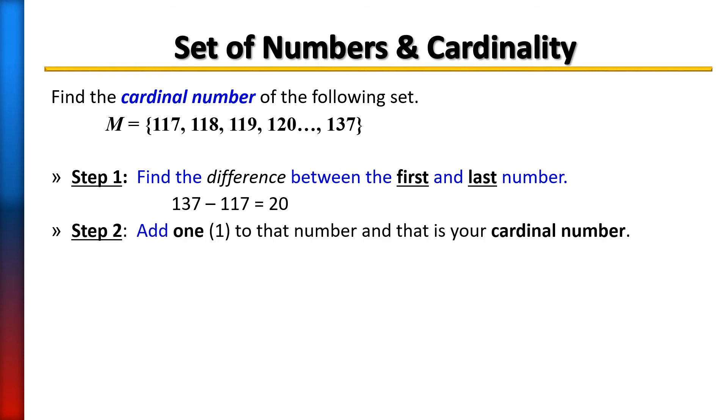And then step two is add one and you're done. So there are 21 members in that set. So we would say n(M) equals 21. Again, take the first number, take the last number, subtract them, then add one. That is all there is to it to finding the cardinal number of a set.